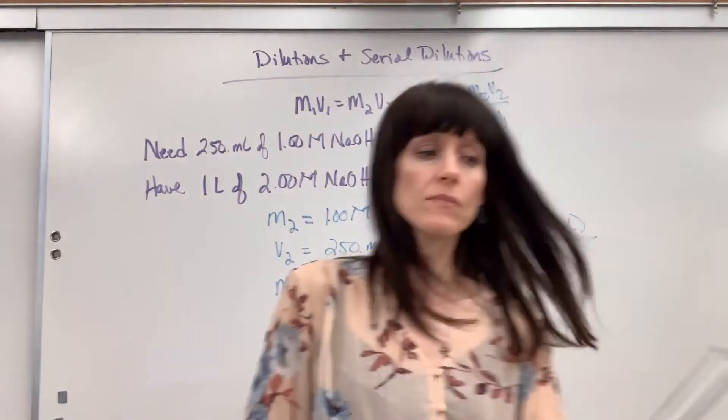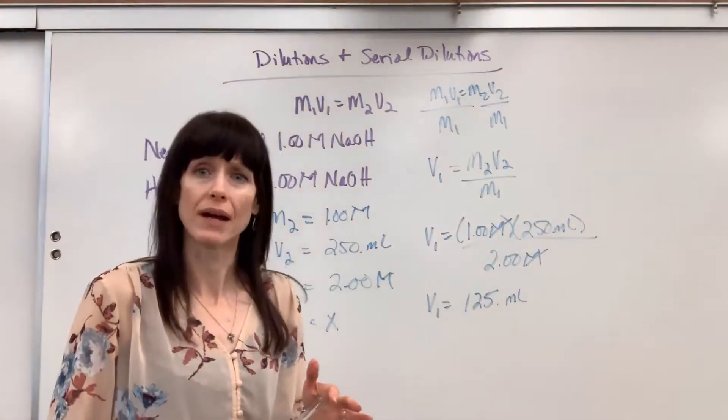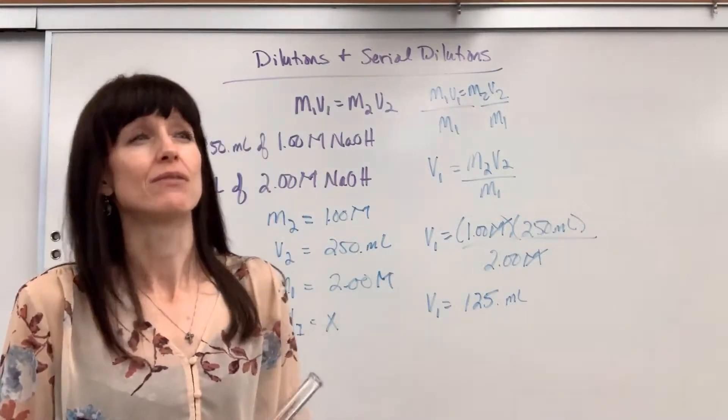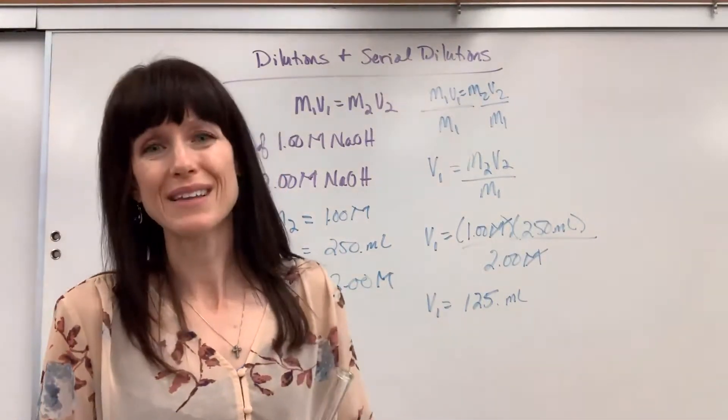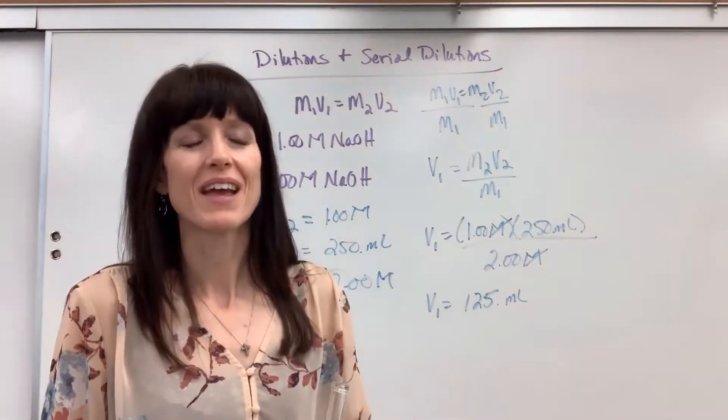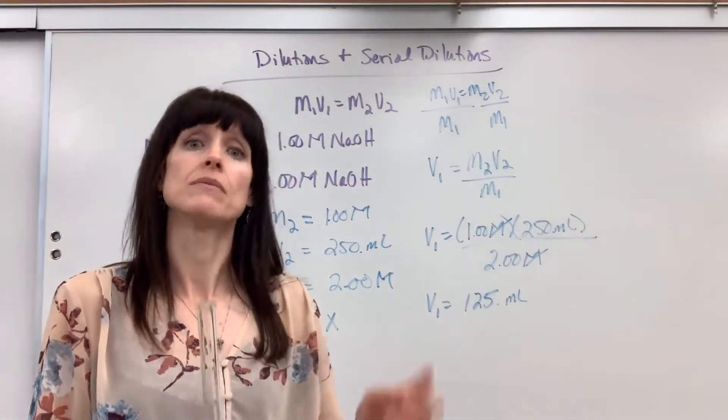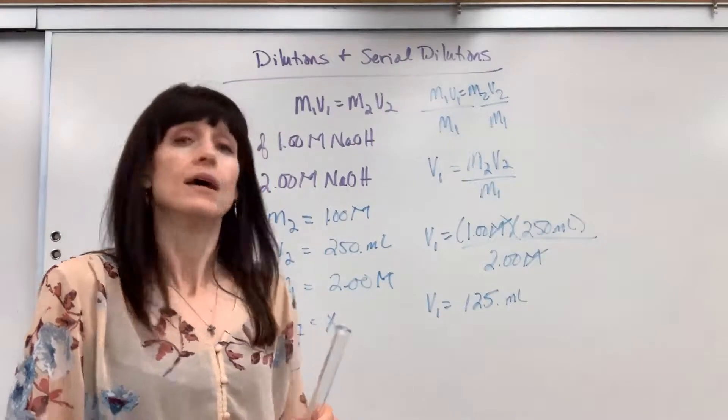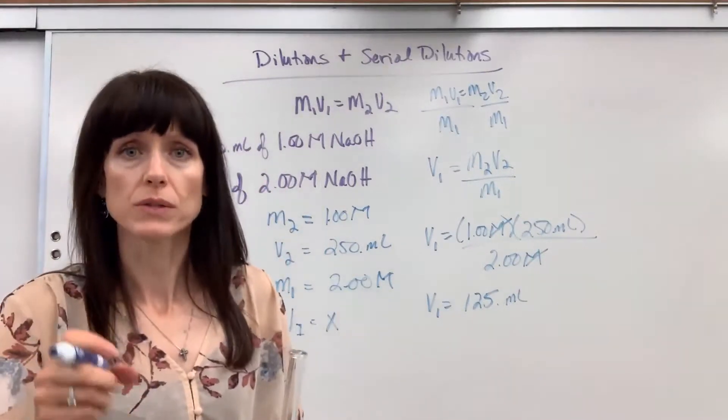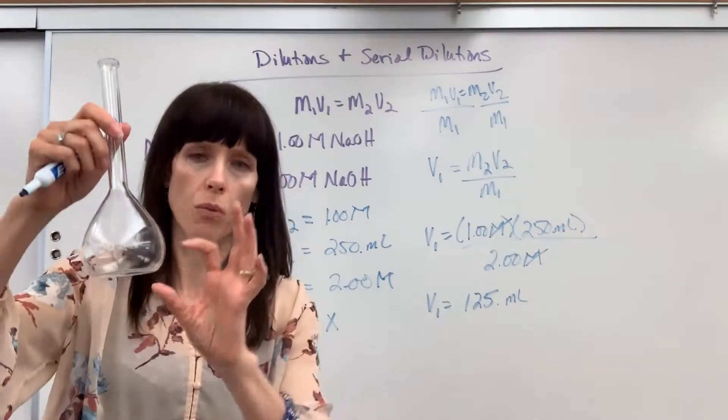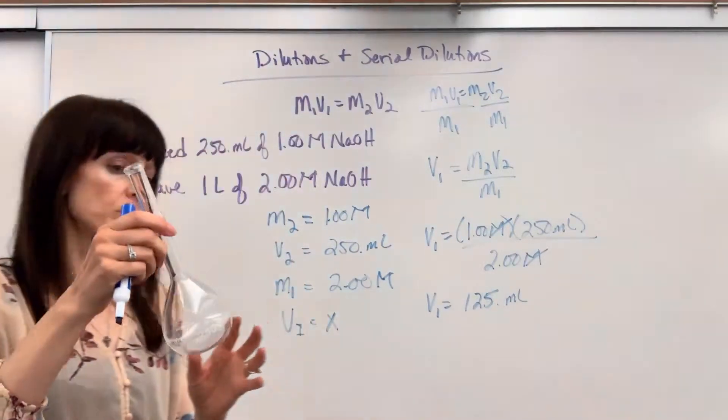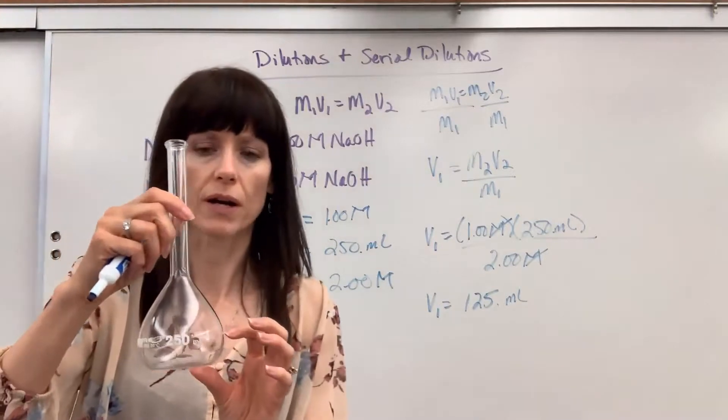So this is how you do it. You could use a buret. You'd have to have a large buret to deliver 125 mils. Most likely, you'd use a graduated cylinder. So get a graduated cylinder where I measure 250 mils. Now this is how I always want you to prepare dilutions. You first put in water, small amount of water. So I would put in maybe about 100 mils of water.